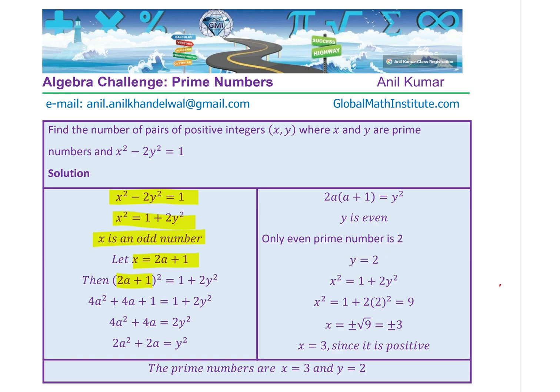Therefore, y = 2, so we get part of our solution. Now we can substitute the value of y in the equation x² = 1 + 2y², and that gives you 2² is 4, 4 times 2 is 8, 8 plus 1 is 9. So x² = 9, meaning x = ±3. But since we are only looking into positive numbers, the answer should be plus 3. Therefore, the prime numbers are x = 3 and y = 2.